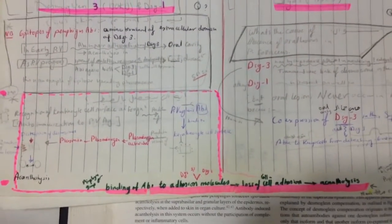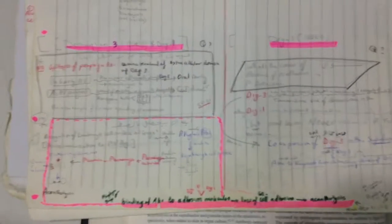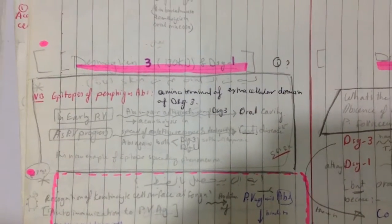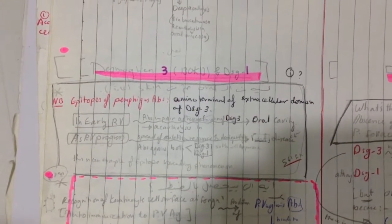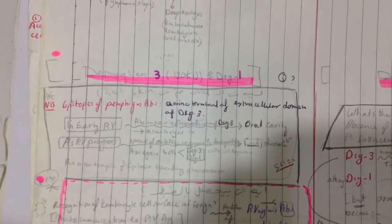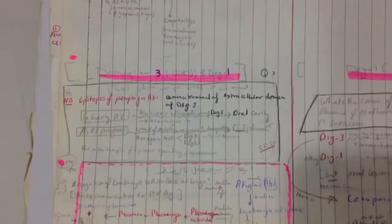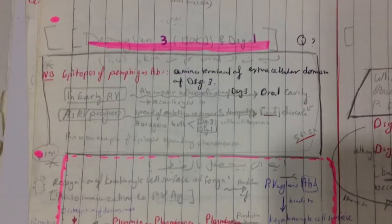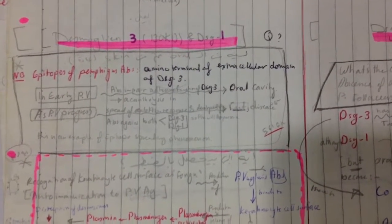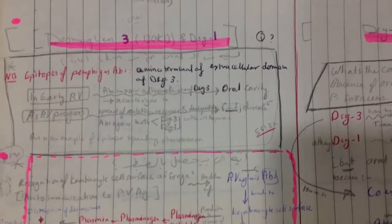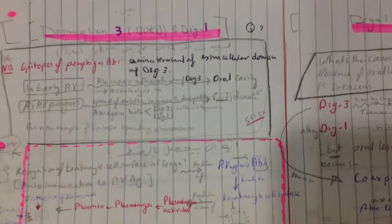The binding of autoantibodies to adhesion molecules leads to loss of cell-to-cell adhesion and acantholysis. Regarding why disease starts in the oral mucosa first: the epitopes of pemphigus antibodies target the N-terminal extracellular domain of desmoglein 3. In early pemphigus vulgaris, antibodies impair the adhesion function of desmoglein 3, leading to acantholysis in the oral mucosa. As pemphigus vulgaris progresses, there is epitope spreading to develop antibodies against both desmoglein 1 and 3, causing cutaneous disease — this is the epitope spreading phenomenon.